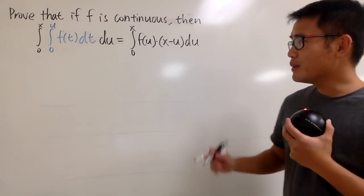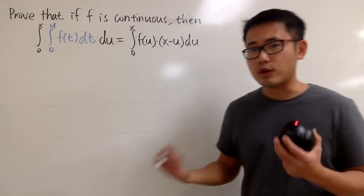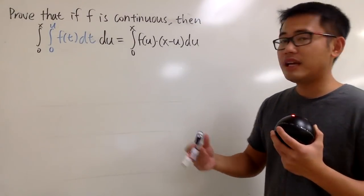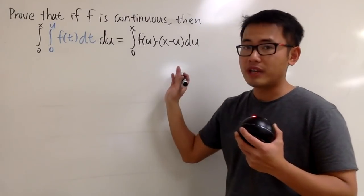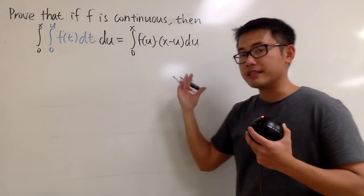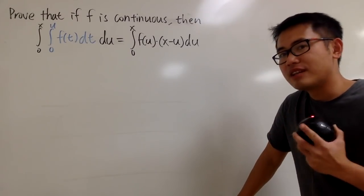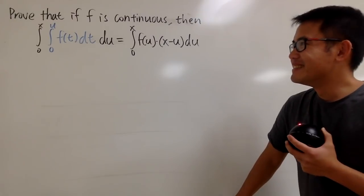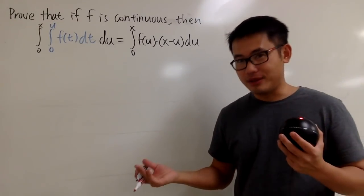We are going to do this from a theoretical approach, because we don't have an actual function to work with. If you like, you can just think about letting f of t equal t squared, and then actually work it out, and you will see that the left-hand side will be equal to the right-hand side, but I will leave that to you guys.